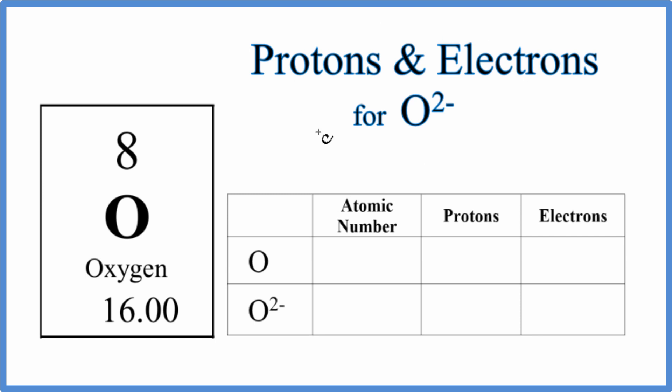Before we do the O2 minus ion here, let's look at neutral oxygen on the periodic table. We know it's neutral because there's no negative or positive sign after it.